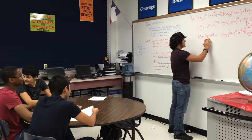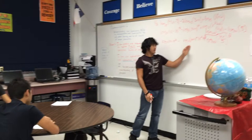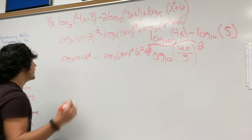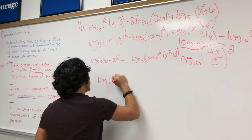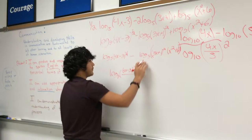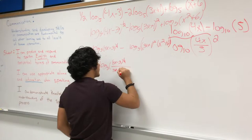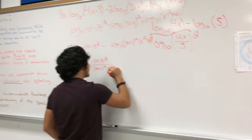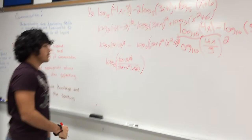Now what we're going to do is divide log base of 5 for 4x minus 3 raised to the one half, and we're going to divide it by log base of 5 for x plus 1 squared times x squared plus 6. So it's going to be log base of 5 for x minus 3 to the one half divided by 3x plus 1 raised to the 2nd power times x squared plus 6. And that is our new log.